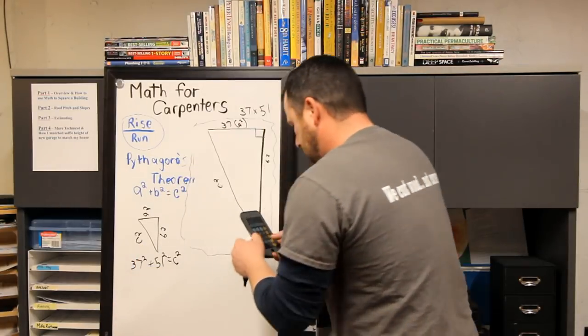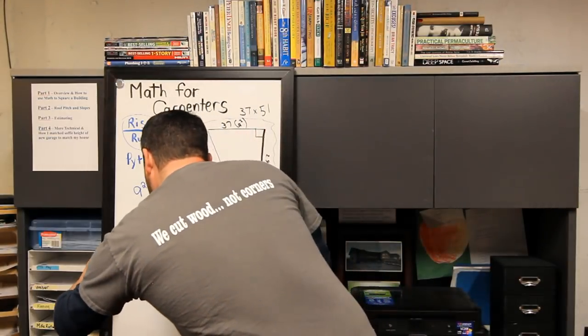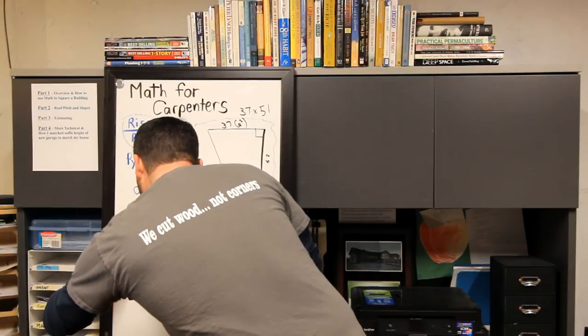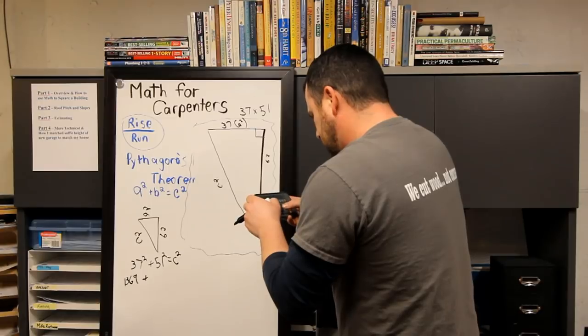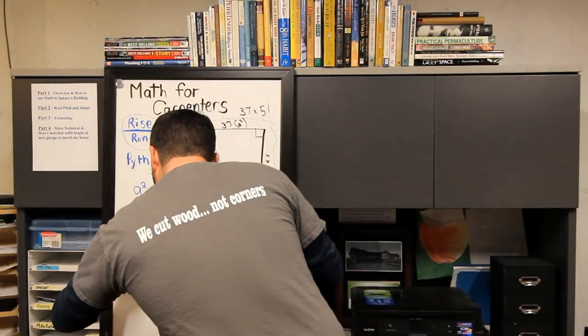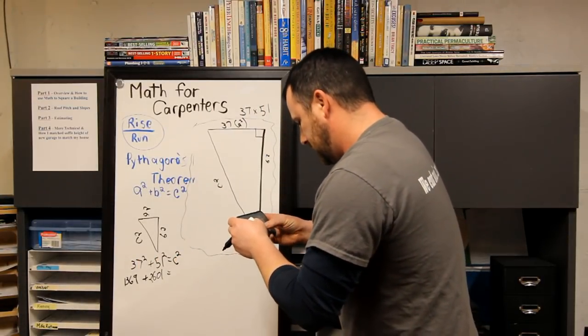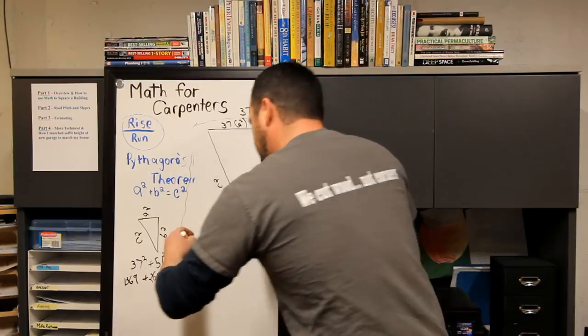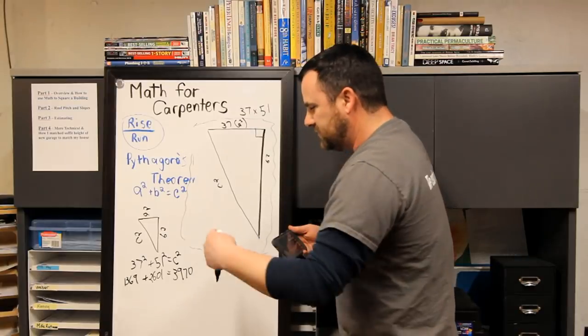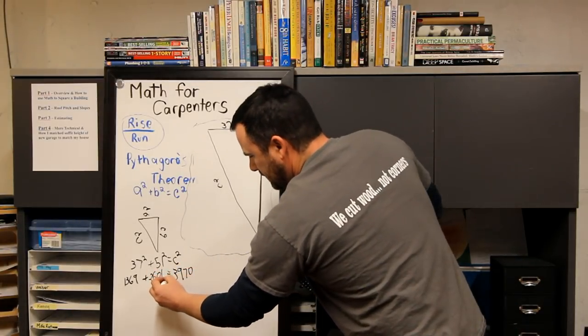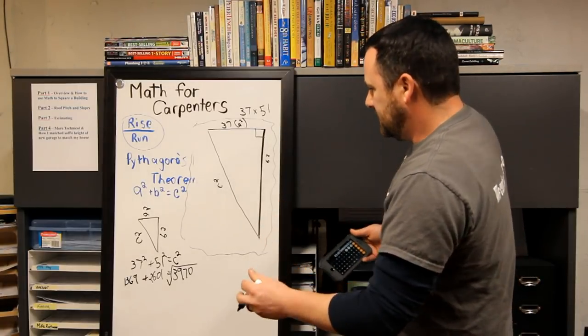37² equals 1369. 51² is 2601. Plus 1369 is 3970. Now because these numbers are both squared, that means I have to do a square root to take that back into feet, so it's 63 feet.